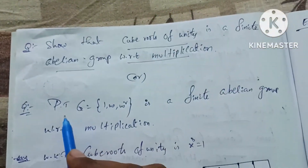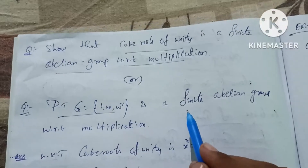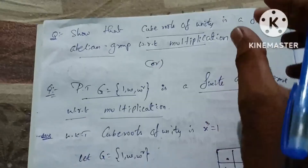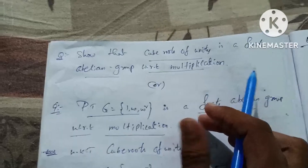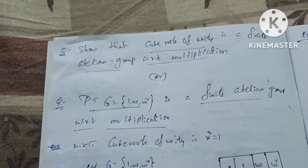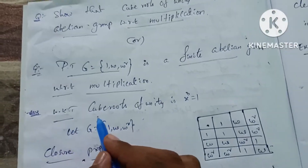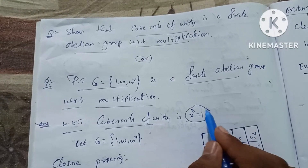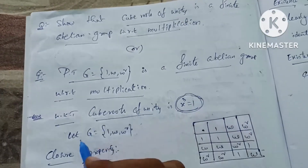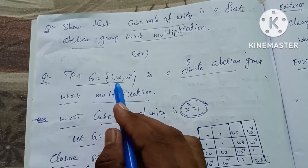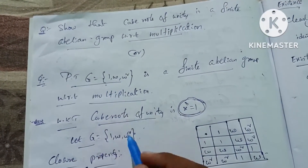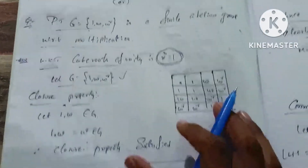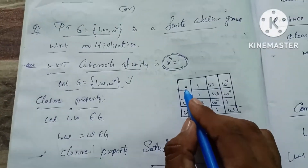Let's prove that G, a set, is a finite abelian group with respect to multiplication. We know that cube roots of unity satisfy x cubed equals 1. So G is equal to {1, omega, omega squared}. Let's show you a composition table first, with binary operation multiplication.